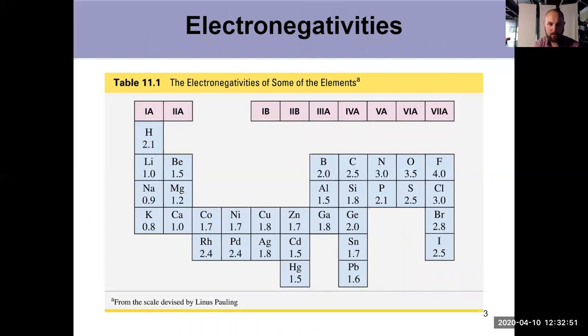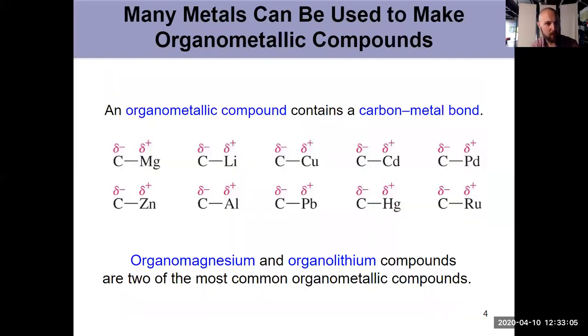It's really only metals that we can use to bond to carbon to have them be less electronegative and then have carbon be a nucleophile, hence the world of organometallics. There are a lot of metals we can use to make an organometallic compound. Organometallic just means it has a carbon-metal bond somewhere in the molecule.